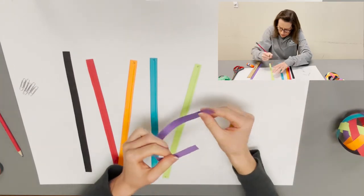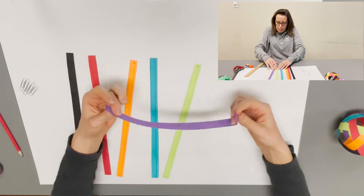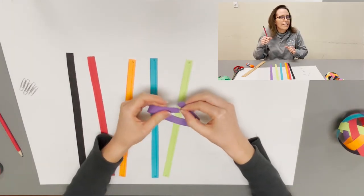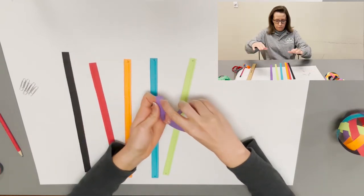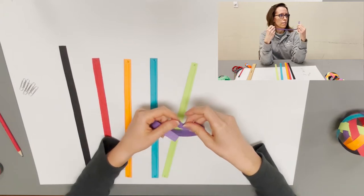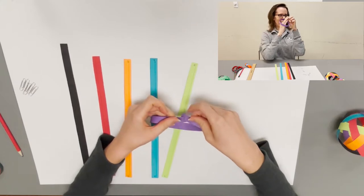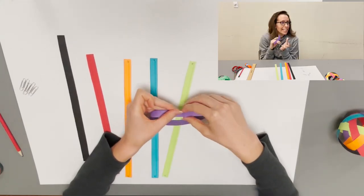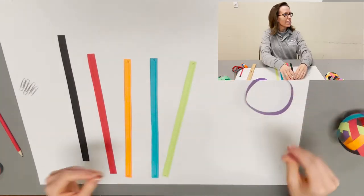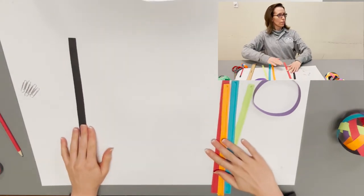The first step is to take your purple strip number six and curve it towards itself and you're going to latch the two tabs together. Make sure that your numbers that you wrote and the tabs go on the inside of the circle. Then set that aside.